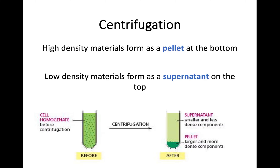Through centrifugation, the high density materials are going to sink to the bottom and form a pellet at the bottom of your tube. The low density materials are going to float up to the top and form what we call a supernatant. You have separated the solution into different densities and can sample whatever it is you're trying to find.